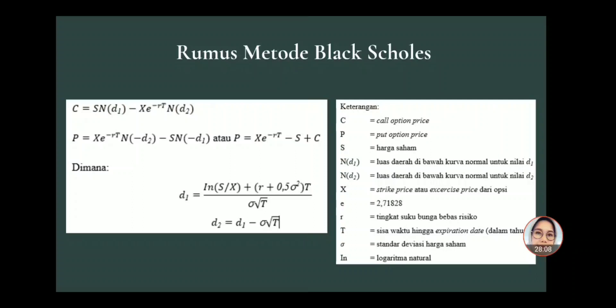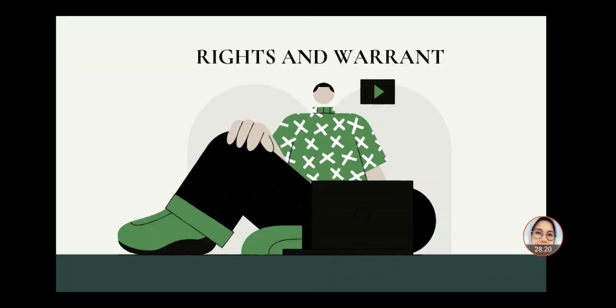Berikut adalah rumus metode Black-Scholes. Berikutnya kita akan bahas mengenai right dan waran.